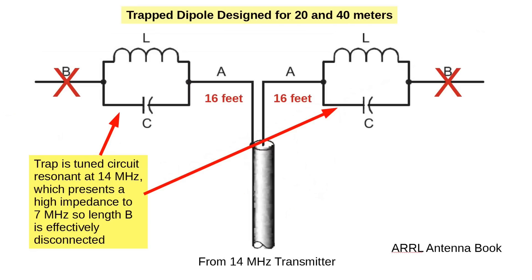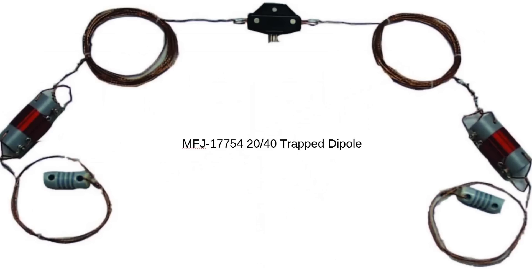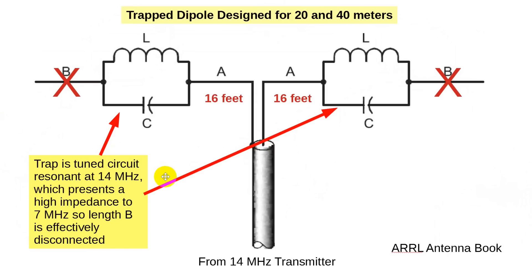I'm going to give this the dimensions of the MFJ 17754 dipole and let's see how it works. This middle part here — 16 feet on either side — is a 20-meter dipole. Now, there is a tuned circuit right here. It's got capacitance and it's got inductance. You may look at traps and ask, well, where's the capacitor?